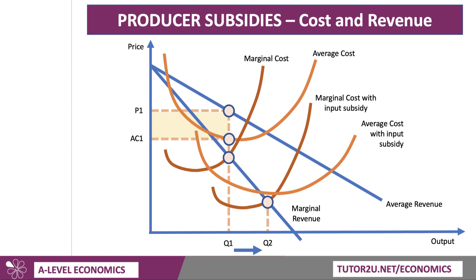So the subsidy expands production. Using the demand curve, there's more output, so they won't necessarily be able to charge P1 anymore — they'll charge a slightly lower price, P2. So the subsidy does bring down the cost, which is a good example of how subsidies can lower the price to consumers. And because the unit cost has come down due to the subsidy, the average cost of Q2 is here. Our output Q2 cuts the average cost curve, so now P2 is well above AC2.